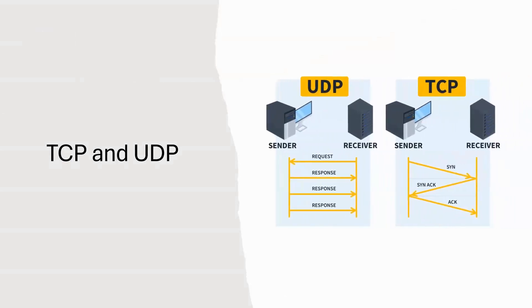There are two key protocols that operate at the transport layer: TCP and UDP. TCP, or Transmission Control Protocol, is like a careful mailman — it guarantees that all segments are delivered and in the correct order. It even asks for confirmation that everything arrives safely. With TCP, you also get what's called a three-way handshake. This is how two devices agree to start communication. The sender says, "Hey, are you there?" The receiver responds, "Yep, I'm here." And then the sender says again, "Great, let's talk." This is why TCP is so reliable, but also slower than UDP.